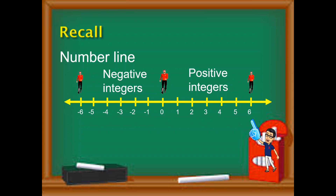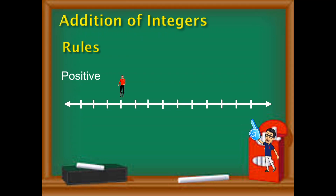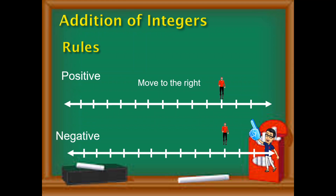So, how do we use the number line when adding integers? Let us see the rule. When the integer is positive, you move to the right. When the integer is negative, you move to the left. Let us learn how to apply this using examples.